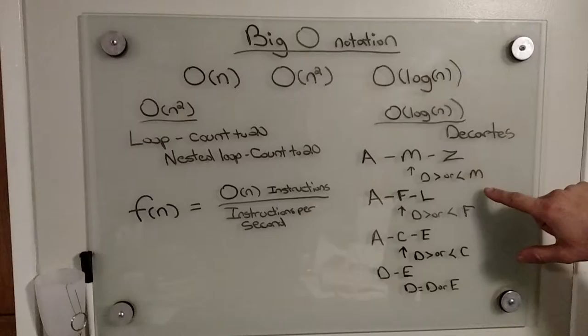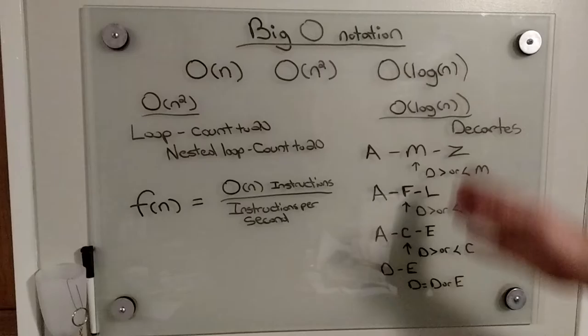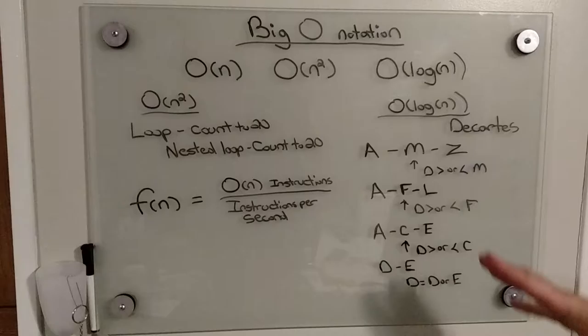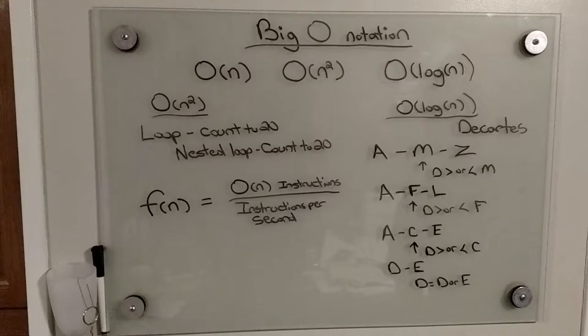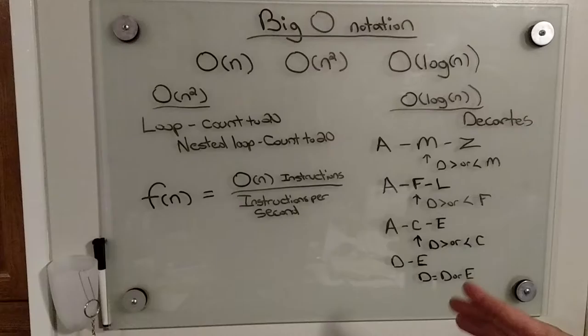Say we're looking for a book written by Descartes. So we would go to the midpoint M and it would compare whether the first letter D for Descartes is greater than or less than that letter M, which we know D is less than that. So it goes to the next iteration where it takes all the letters. You don't even have to search anything past M because we know that D is less than M.